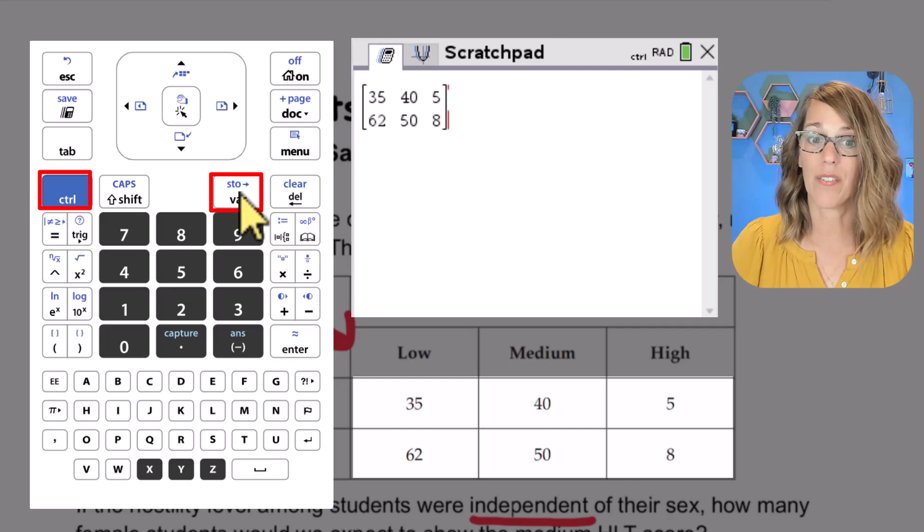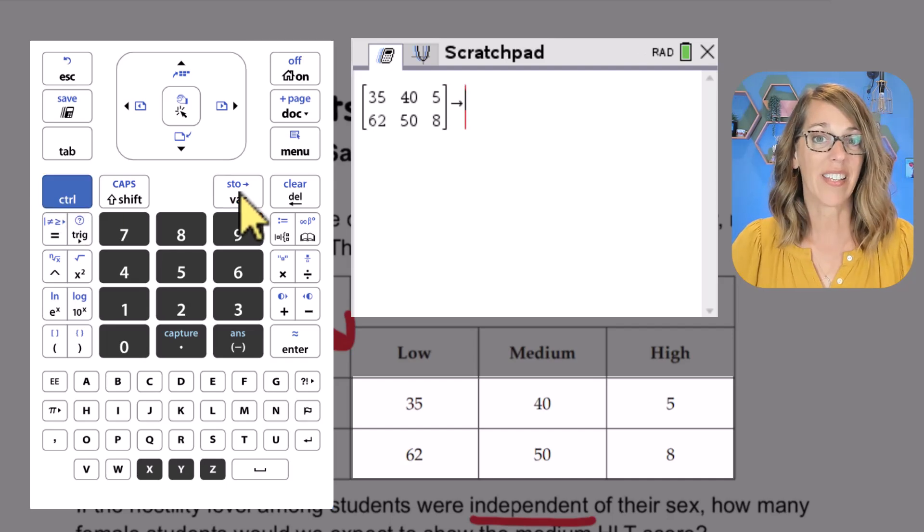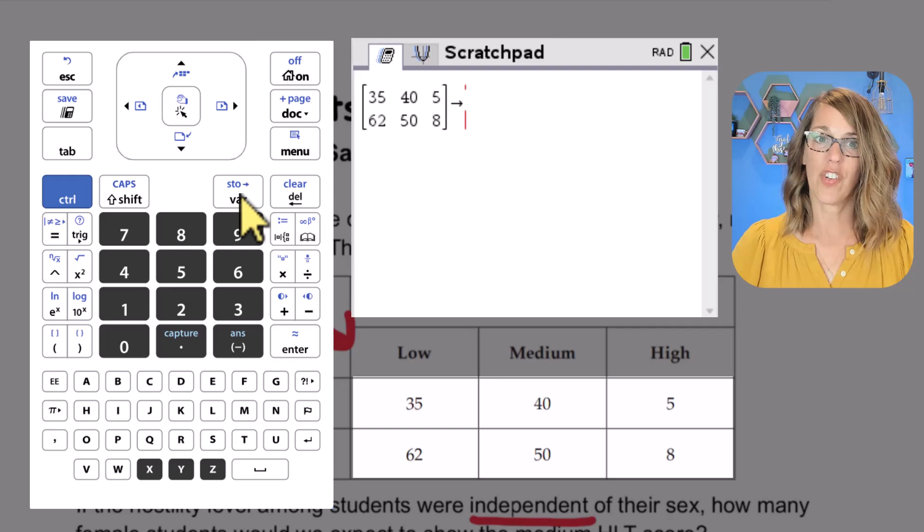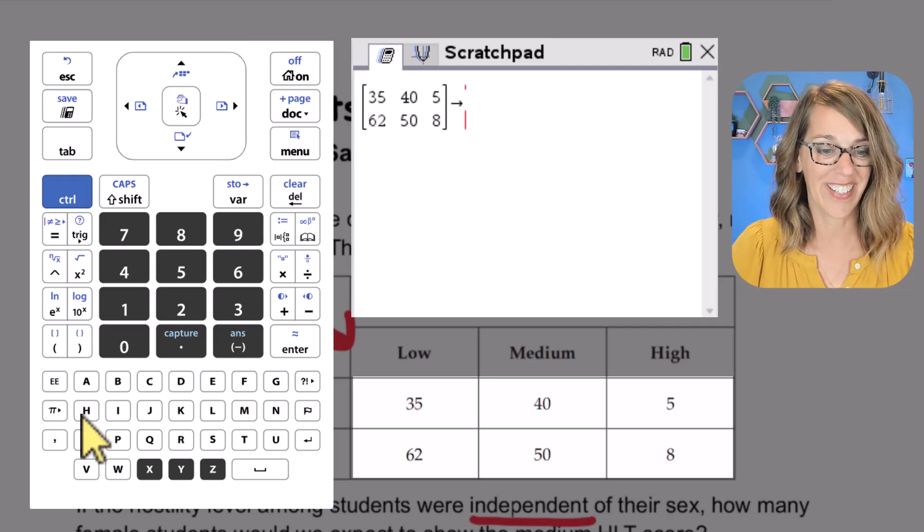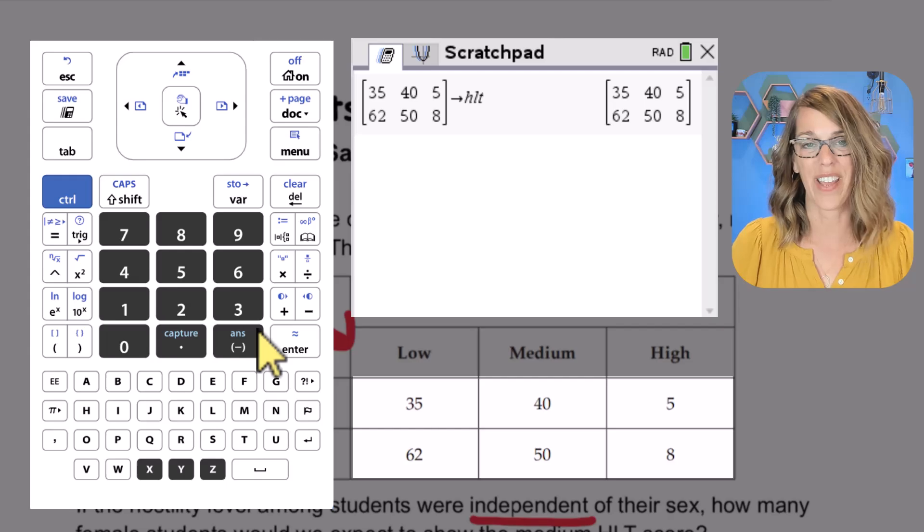So control followed by var for store. I'm going to store this as a name. This was the HLT test, so let's store this as HLT and then enter. It's stored.